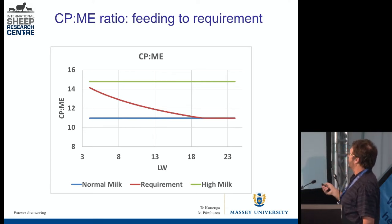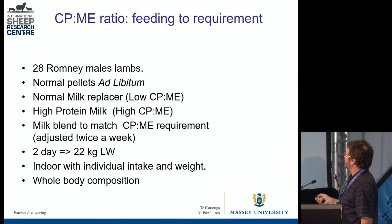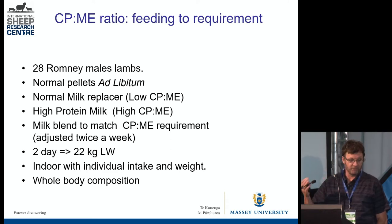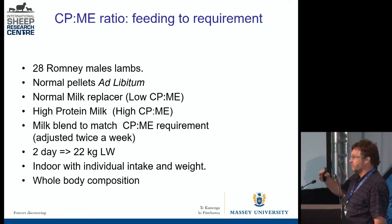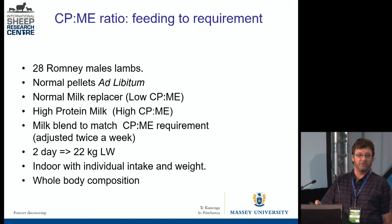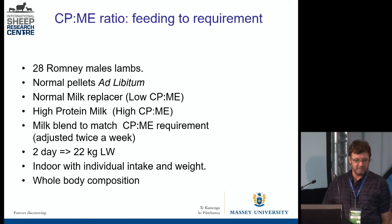In the first experiment we had one milk always at the high protein-to-energy ratio and one at the normal, really low level — just those two groups. But if we look at the requirement, it says it has to be high at the beginning and go low towards the end. So in the next experiment, we said we want to keep some lambs on the high level all the time, some on the normal level, and for some we will adjust the milk composition as the animal is growing. We had 28 Romney lambs, all male, given normal pellets. One group had the normal milk replacer, one had the high protein-to-energy ratio milk all the time, and the last group we blended the milk as the animal grew, adjusting the protein-to-energy ratio in the milk every three days based on live weight and a theoretical growth of 300 grams a day. We got them up to 20 kg live weight, measuring all intake, weight, and whole body composition.